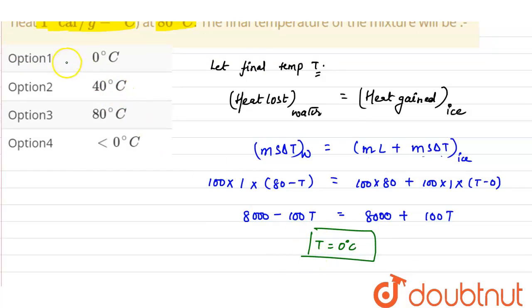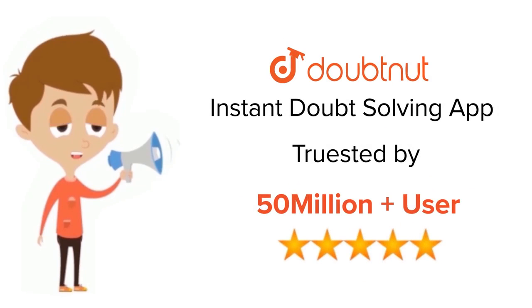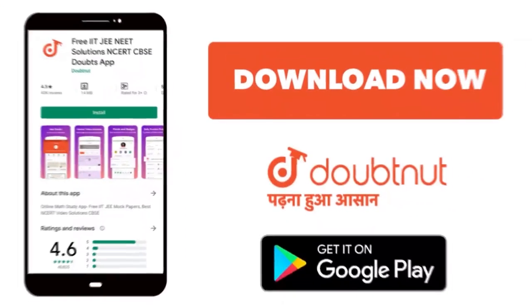So from the options we see option 1 is correct. For class 6 to 12, IIT-JEE and NEET level, trusted by more than 5 crore students, download Doubtnut app today.